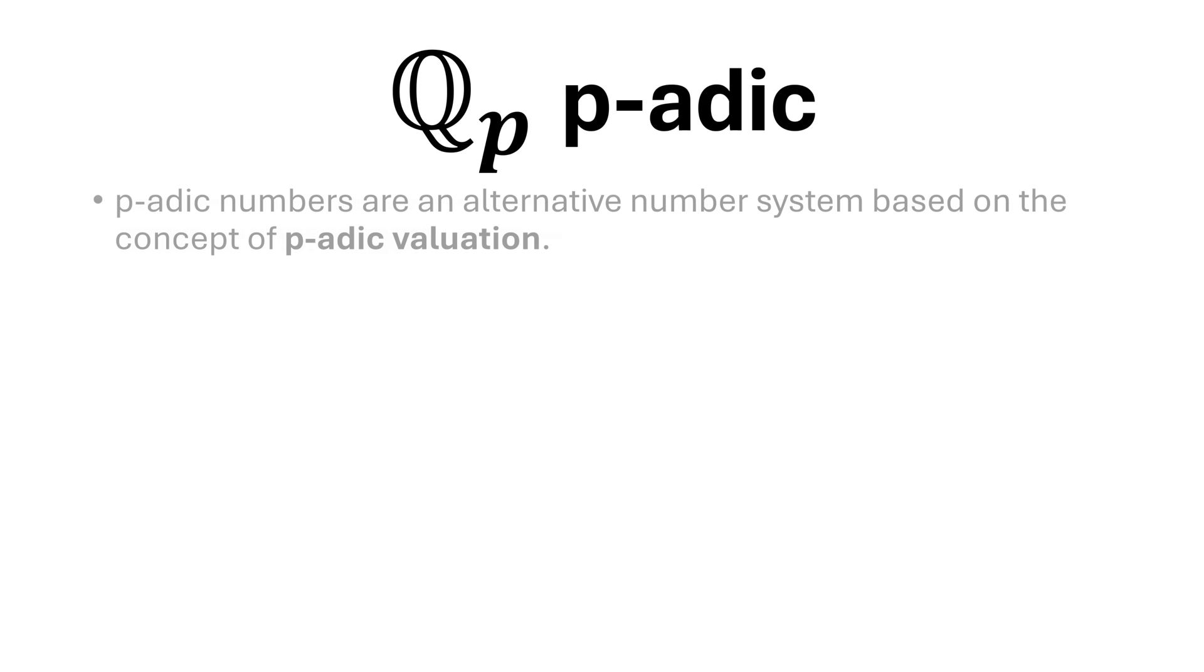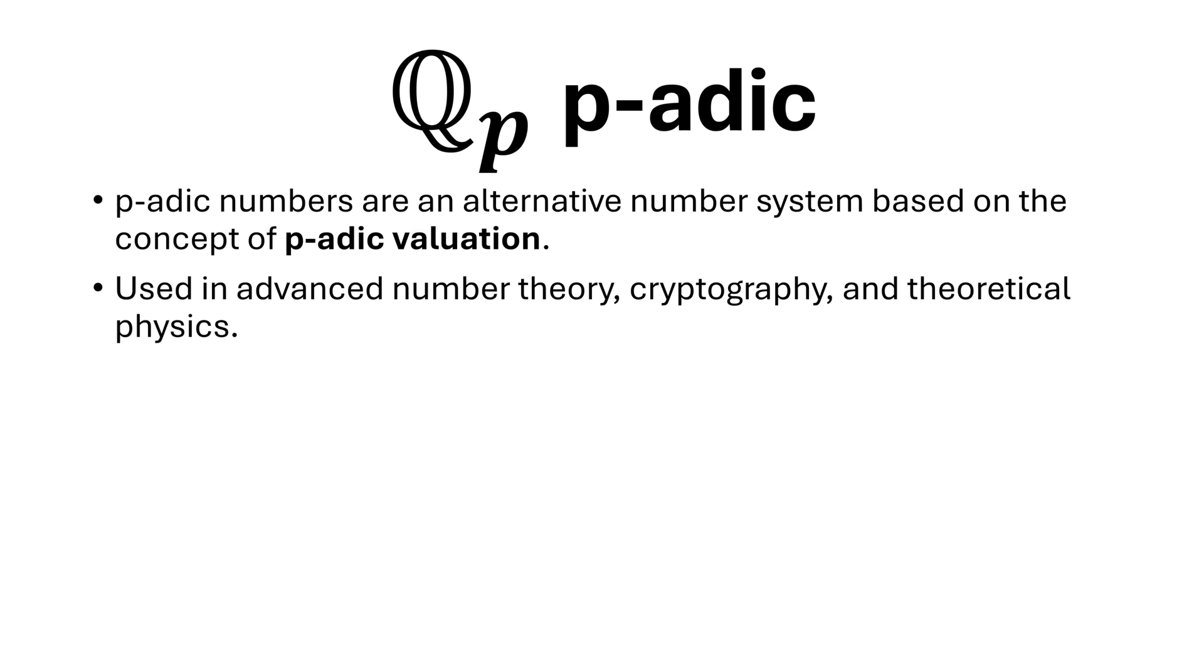P-adic numbers are an alternative number system based on the concept of p-adic valuation. Used in advanced number theory, cryptography, and theoretical physics.